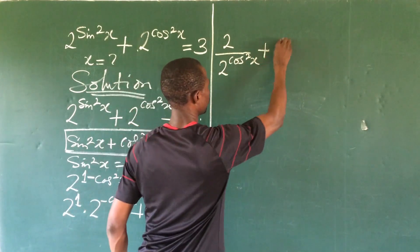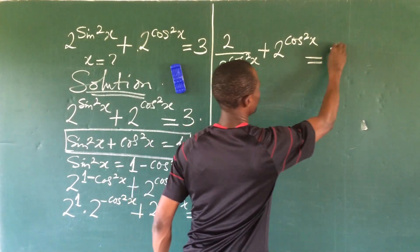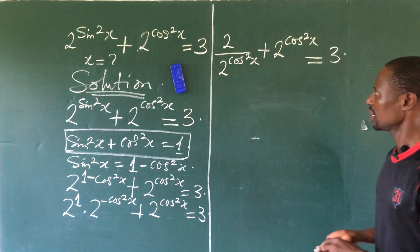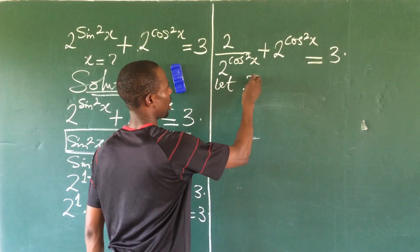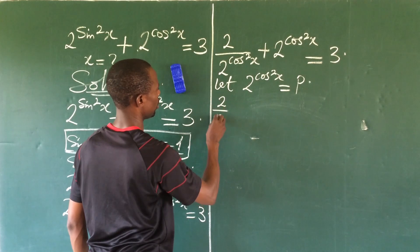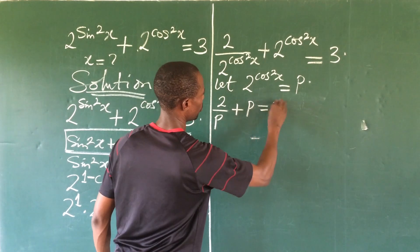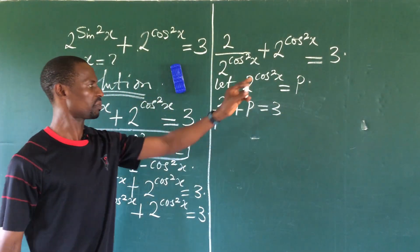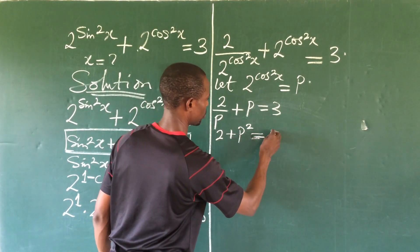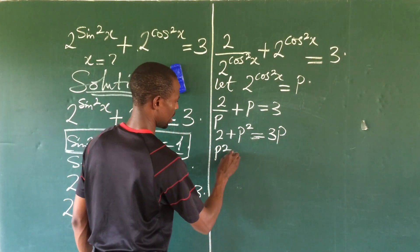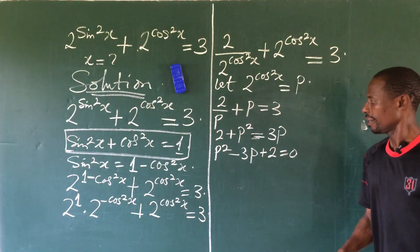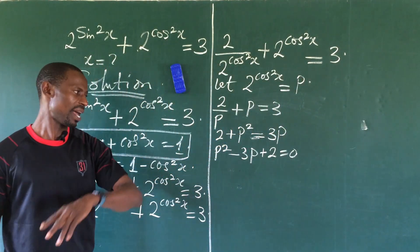So here we're going to have this to be 2 all over 2 to the power of cos squared x, plus 2 to the power of cos squared x, equal to 3. At this point, all we need to do is bring in another variable to represent 2 to the power of cos squared x. So from here, let's let 2 to the power of cos squared x equal to p. So our equation will now become 2 all over p plus p equal to 3. Let's eliminate the denominator by multiplying through by p. This gives us 2 plus p squared equals 3p.